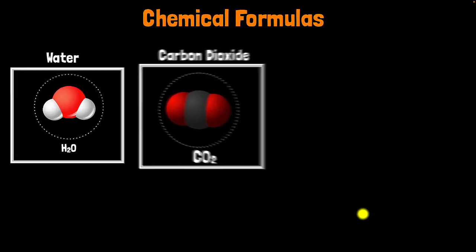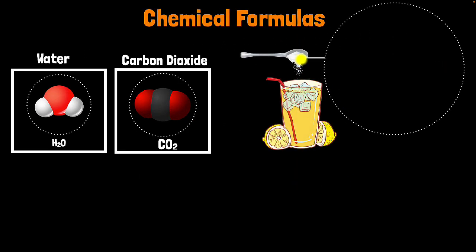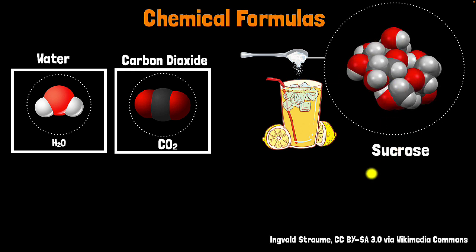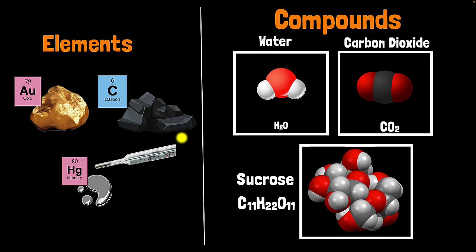Molecules can get much bigger. If you've ever put sugar in lemonade, you've worked with a molecule called sucrose. Its chemical formula is C11H22O11, meaning 11 carbon atoms attached to 22 hydrogen atoms attached to 11 oxygen atoms — all in one single molecule. To put it all together: all matter in the universe is made from about 100 different elements; when these elements combine chemically, we get compounds; the ratio of elements is always fixed in compounds, represented by their chemical formulas.